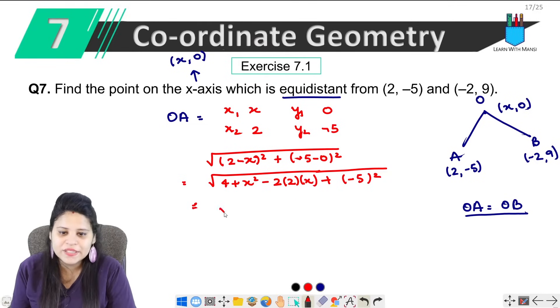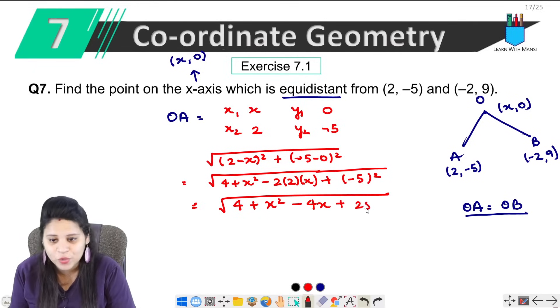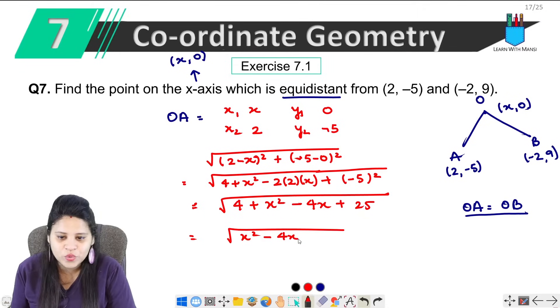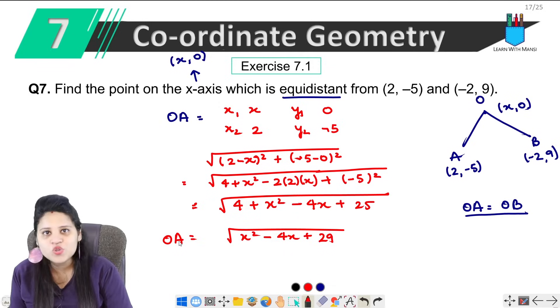Now let's solve this. So under root, 4 + x² - 4x + 25. So we can write this as under root (x² - 4x + 29). So this is OA.